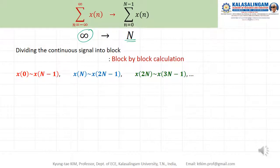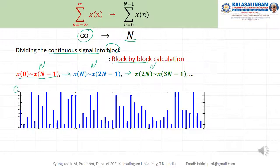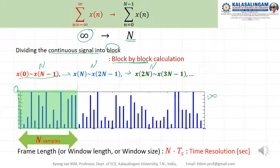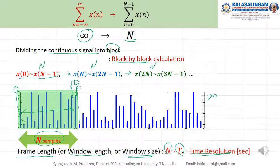The solution is to divide the continuous signal into blocks and calculate block by block — N samples, N samples, N samples. We calculate N samples of the discrete time Fourier transform while moving the window like this. The signal goes from zero to infinite N, and we block it into N samples. The length from here to here we call the frame length, or window length, or window size. The interval in samples is the sampling period T-s, so the length is N times T-s — we call this the time resolution.